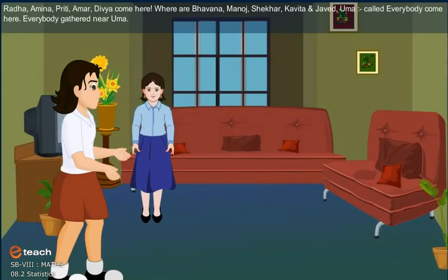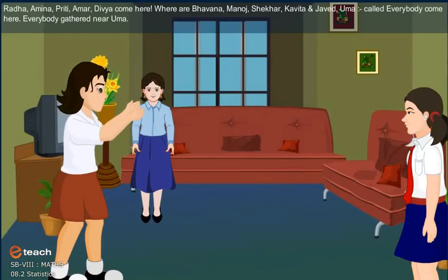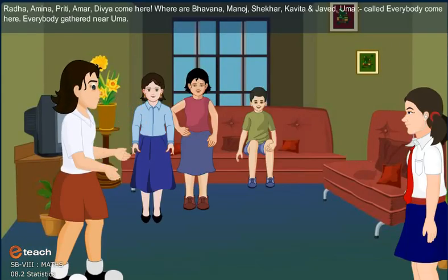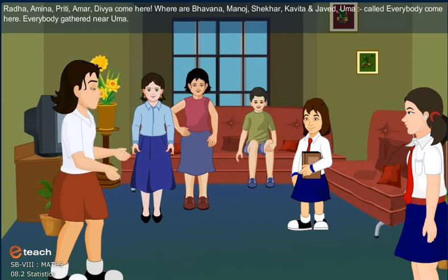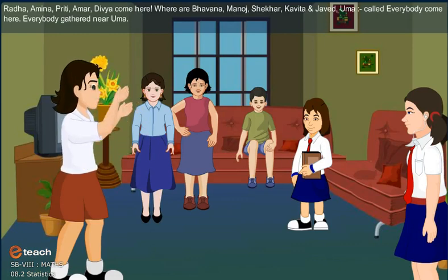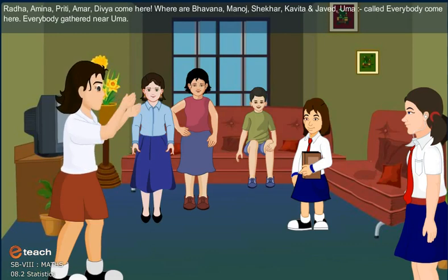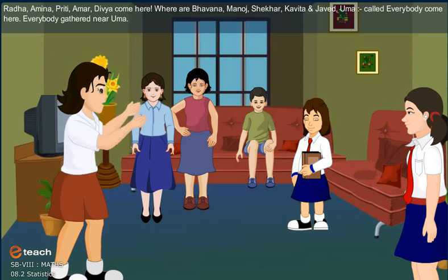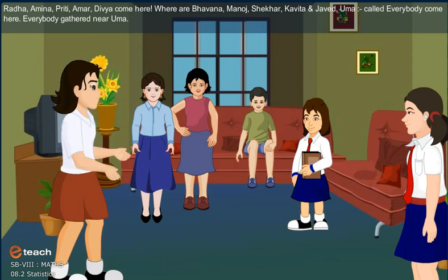Radha, Ameena, Preethi, Amar, Divya, come here! And where are Bhavna, Manoj, Shekhar, Kavita and Javed? Uma called everybody! Everybody gathered near Uma.